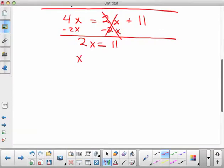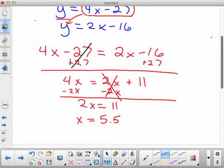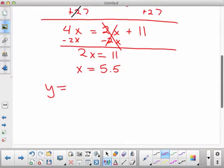And so by dividing by 2, we know x is equal to 5.5. Now to figure out what y is, because we want to know what x and y both are, I'm going to use that bottom equation, y equals 2x minus 16. I'll recopy it.